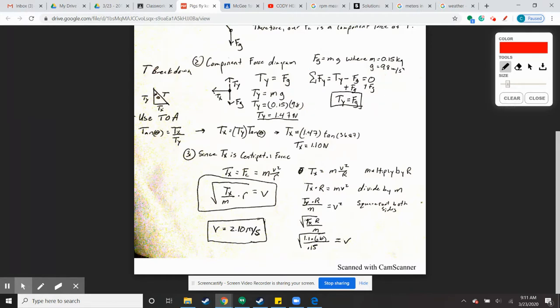Remember, Fg is not just the acceleration of gravity. It's M times G, where M is 0.15 kilograms, and G is 9.8 meters per second squared. G's not going to change unless we're on a different planet.